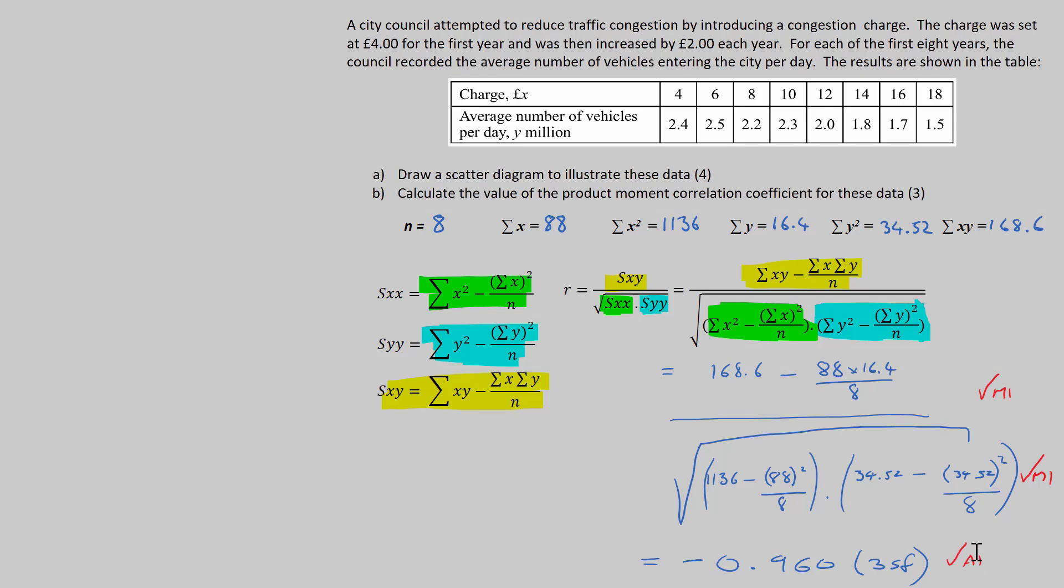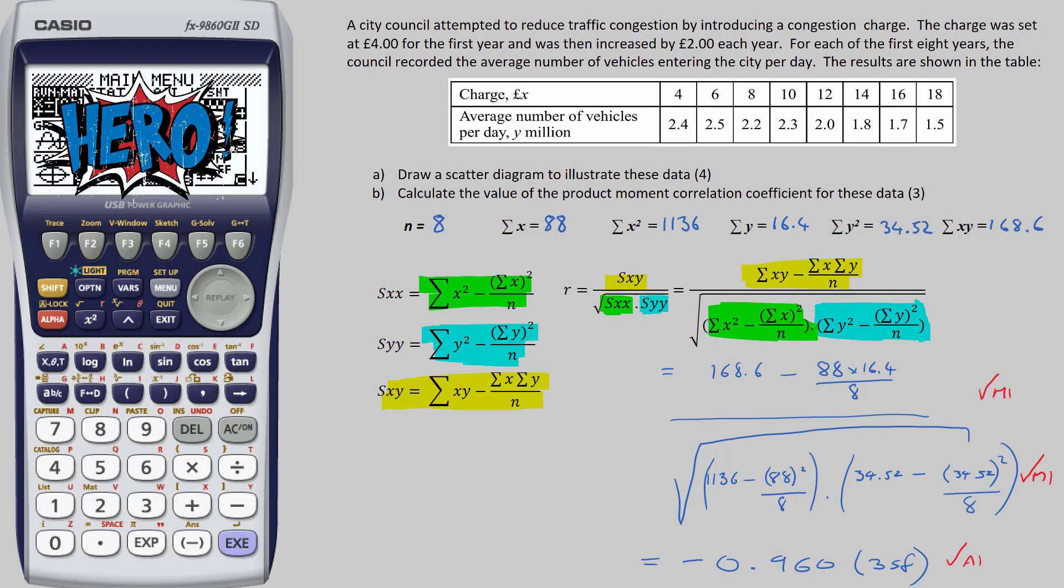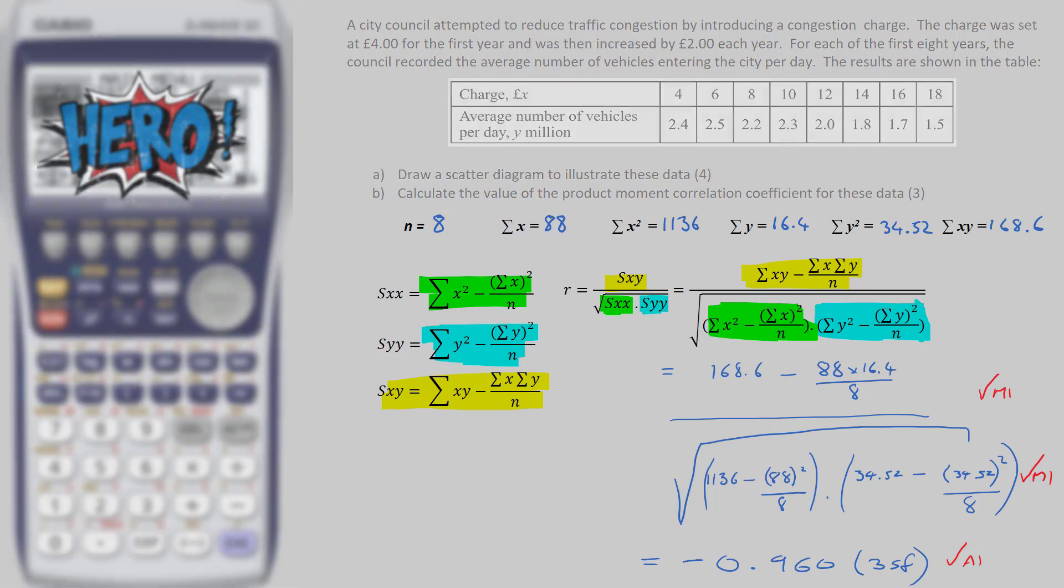We will get the third and final accuracy mark for writing down the correct value of PMCC. Now, there's no getting around the fact that you need to learn these formula, and you will also need to be able to substitute correctly into them to gain the method marks. However, the graphical calculator has done all the hard number crunching, so you don't have to, saving you both time and minimising the risk of making a typing error in this otherwise long and intricate calculation.